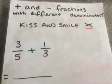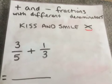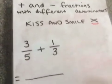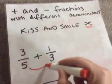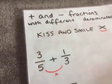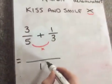So we do this by smiling first, and that means that we are multiplying our denominators together. So we're smiling and we're multiplying our denominators. So 5 times 3 is going to give us a denominator of 15.